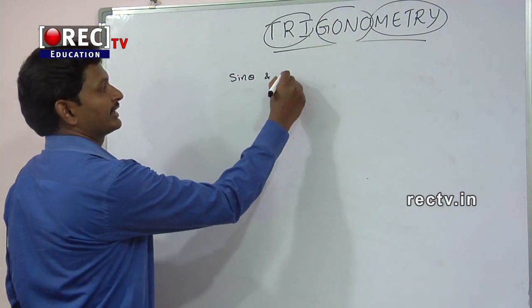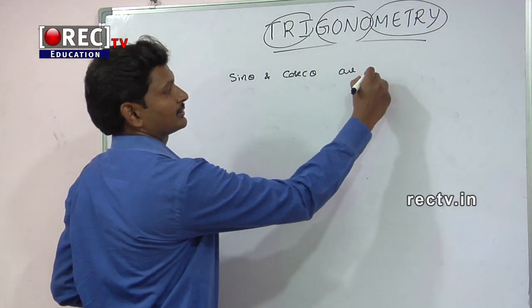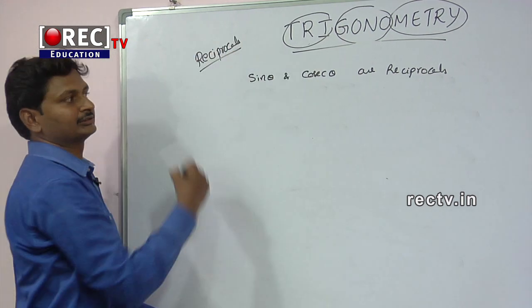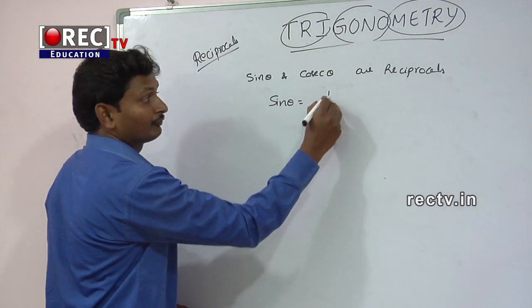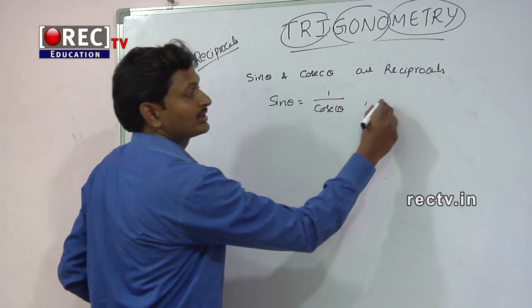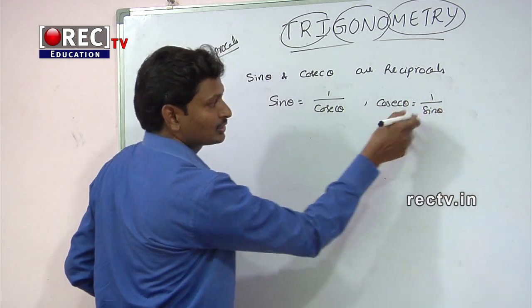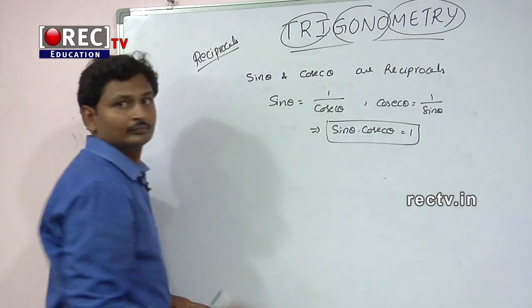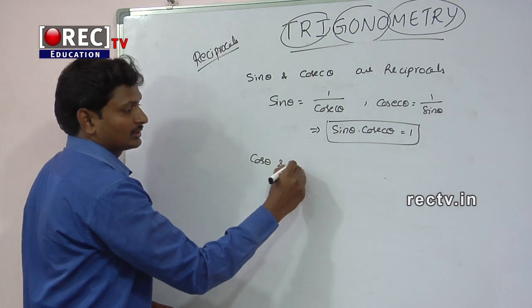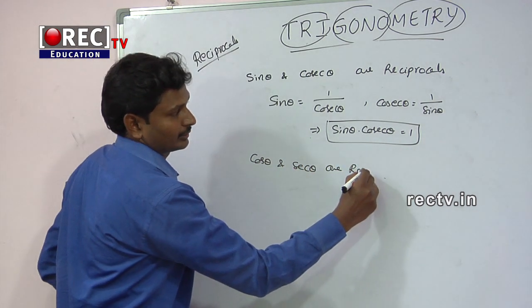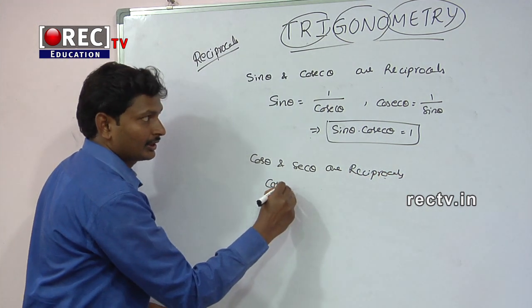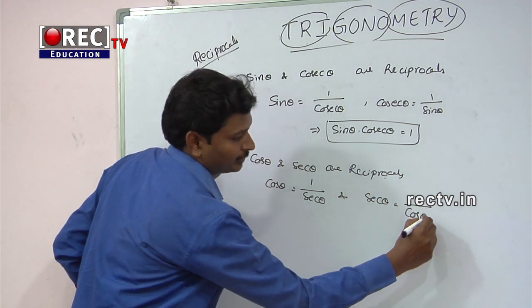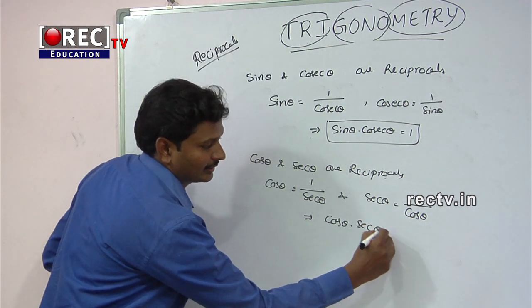Sin theta and cosec theta are reciprocals: sin theta equals 1 by cosec theta, and cosec theta equals 1 by sin theta. From these, sin theta into cosec theta equals 1. Similarly, cos theta and secant theta are reciprocals: cos theta equals 1 by secant theta and secant theta equals 1 by cos theta, so cos theta into secant theta equals 1.